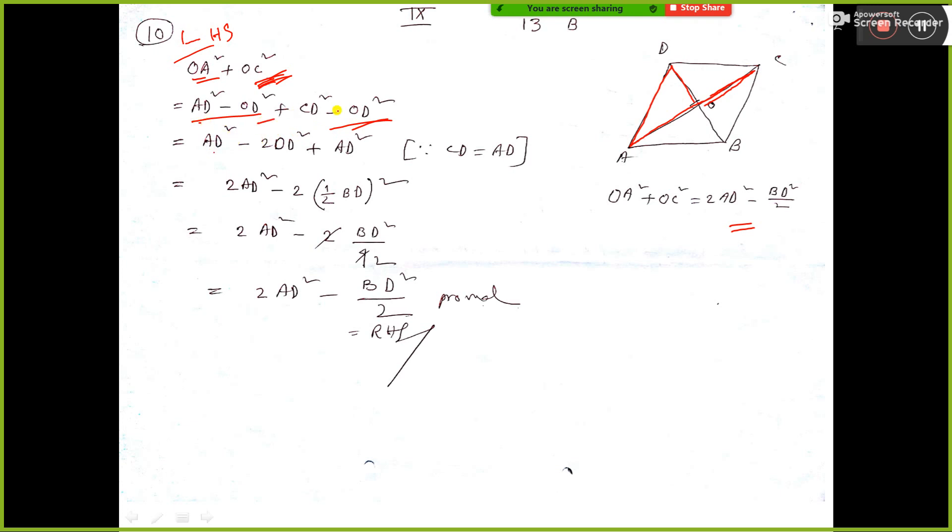See here AD square is there. OD means 2OD and CD means AD. You see CD means AD because this is a rhombus.